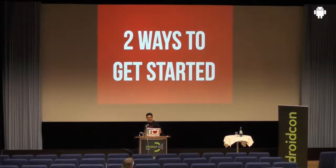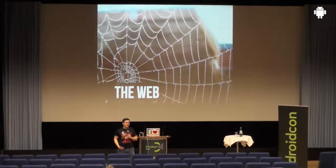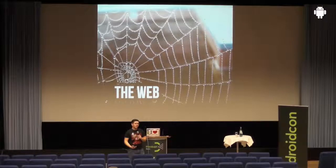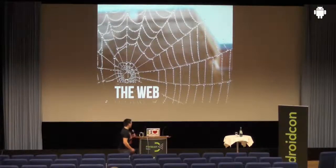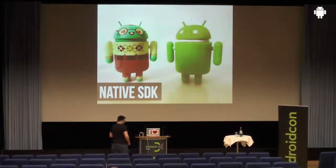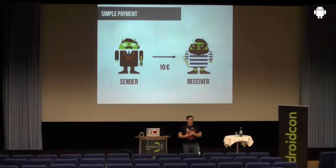There are two different ways to get started. The first is the traditional web approach: your regular PayPal integration, which we call Express Checkout. You have a store, a PayPal button, you click it, get redirected, enter your data, get redirected back to the merchant, confirm payment, it executes, and you get a success page. For native Android, we want something different. We offer a simple payment — one-on-one, like paying somebody 10 euros — and that's quite simple.